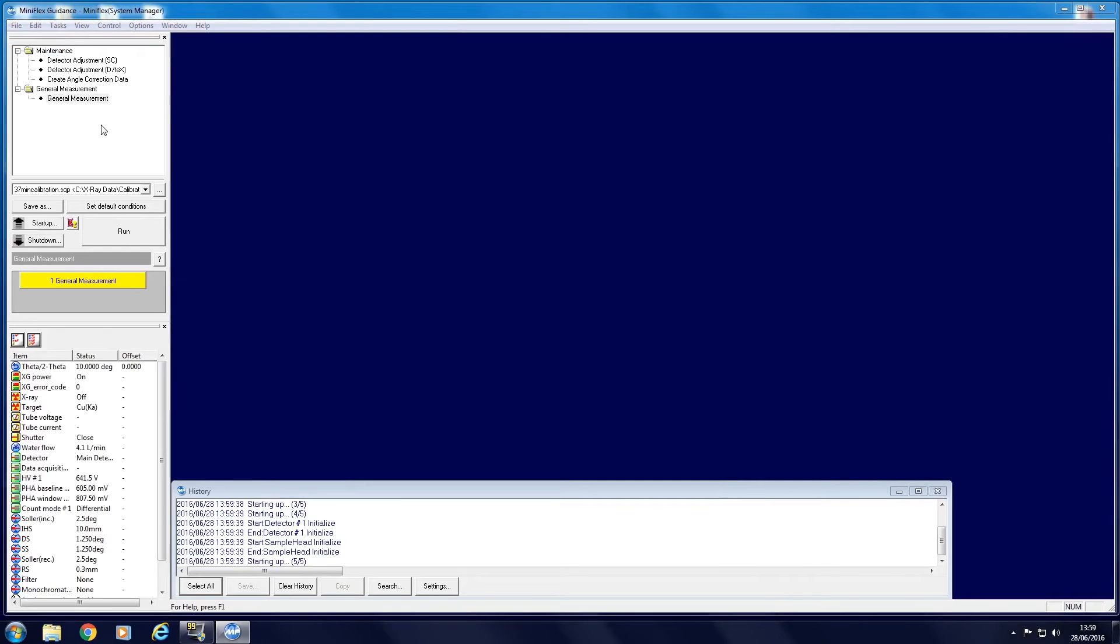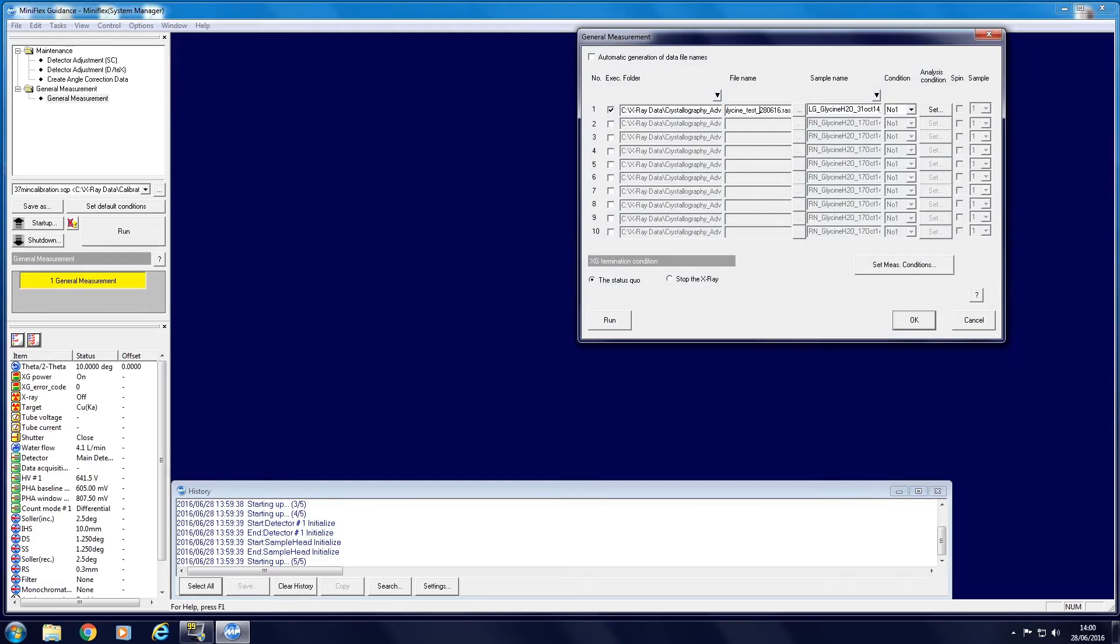To collect a pattern, click the yellow General Measurement button. This will bring up a new window, in which you can choose a name and directory for your data to be saved.